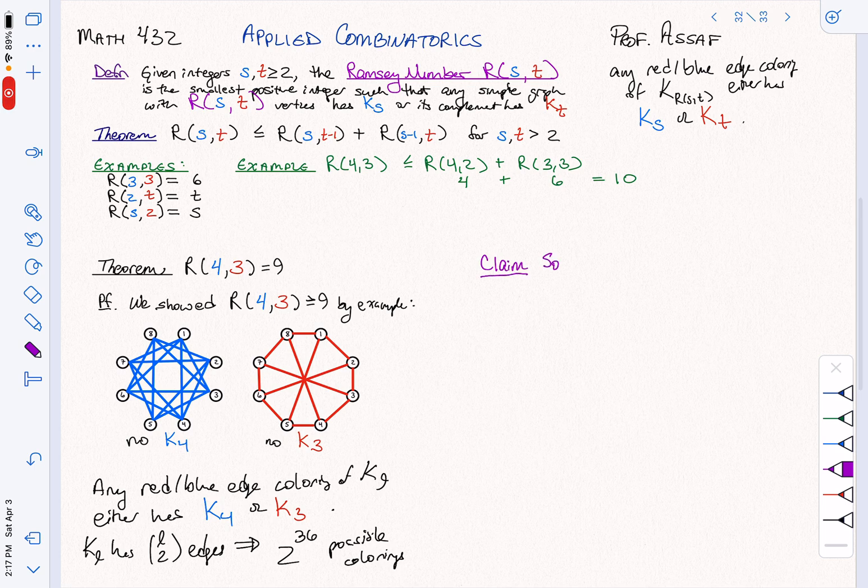Here is the claim that I'm going to make that's going to allow us to prove the theorem. The claim is there is some vertex V of K9 that has either at least four red edges or at least six blue edges.